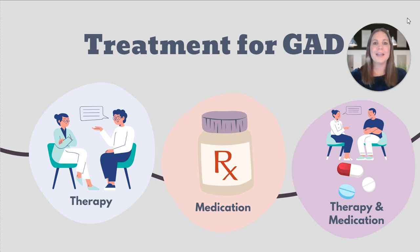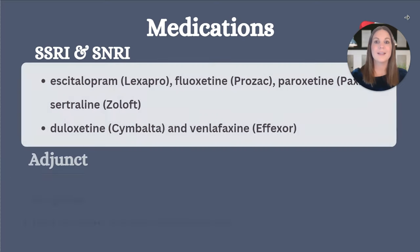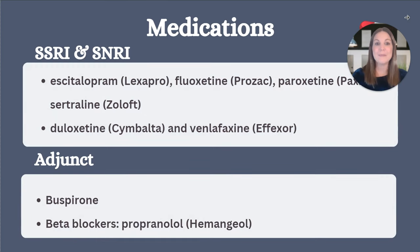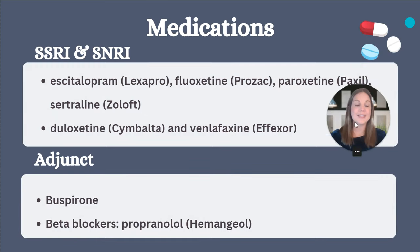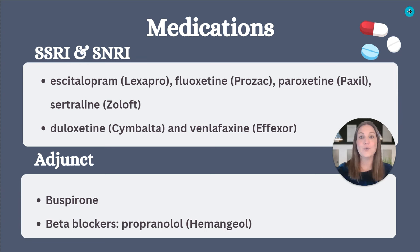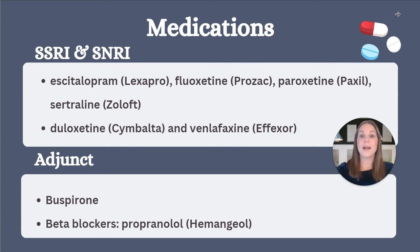Our selective serotonin reuptake inhibitors, known as SSRIs, and our selective norepinephrine reuptake inhibitors, or SNRIs, are our first-line medications. There are several SSRIs available within this class, including escitalopram or Lexapro, fluoxetine or Prozac, paroxetine or Paxil, and sertraline or Zoloft, just to name a few.